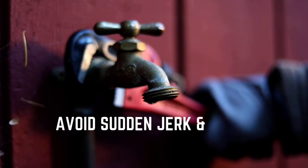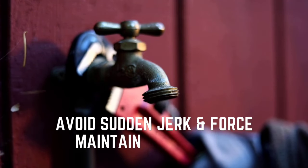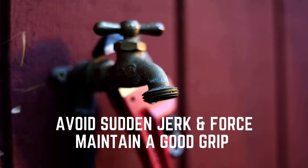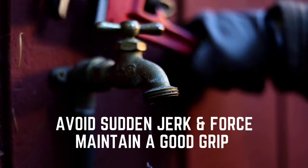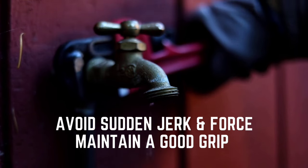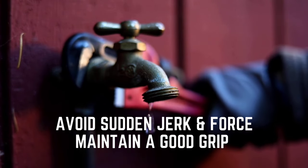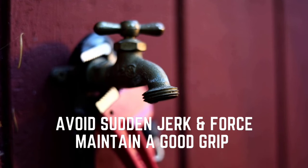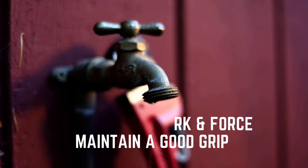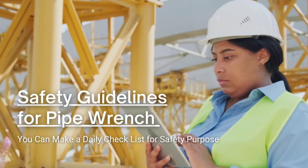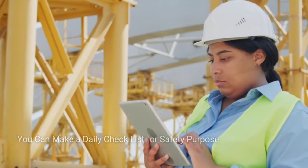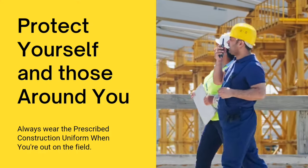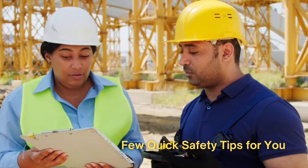Apply steady pressure in the direction you need to turn the pipe. Avoid sudden jerks or excessive force as this can damage both the pipe and wrench. Always maintain a good grip on the handle and use your own body weight to help apply torque rather than just your arms. Now, let's talk safety. Like with any tool, it's important to use a pipe wrench safely to avoid injury. Here are a few quick safety tips for you.